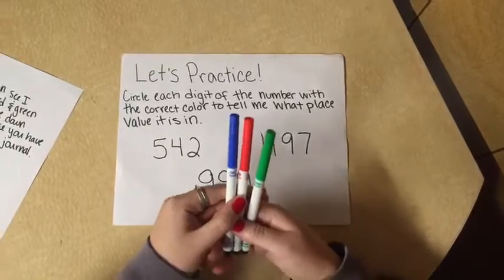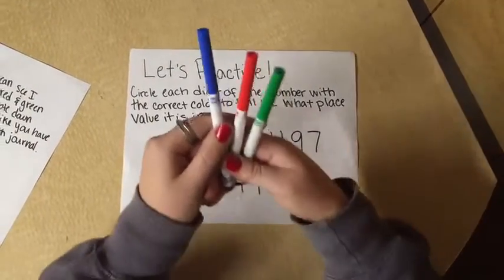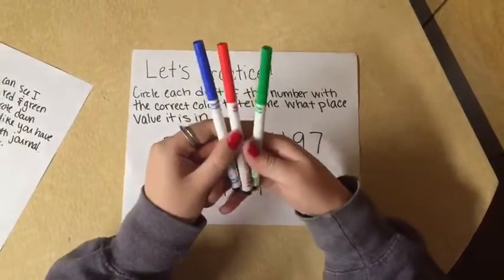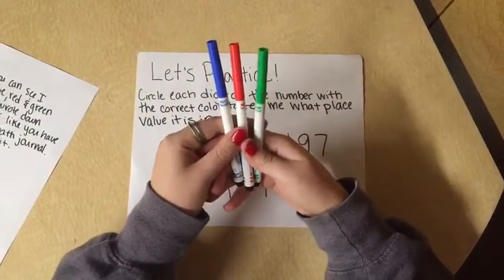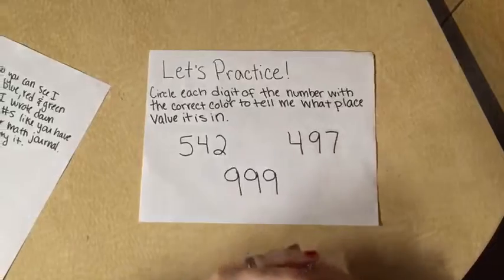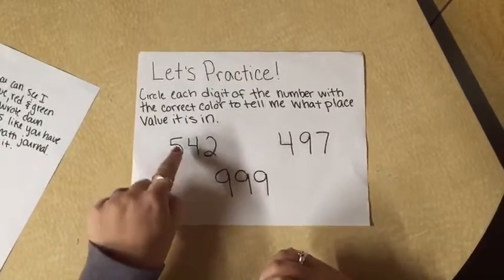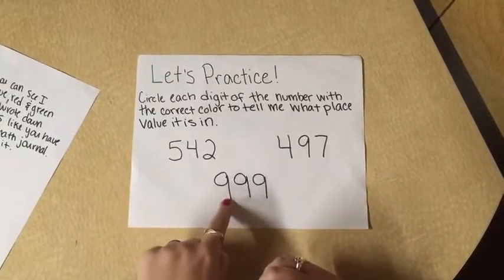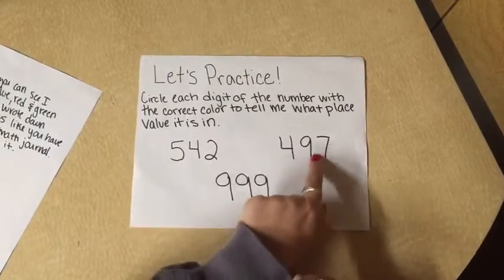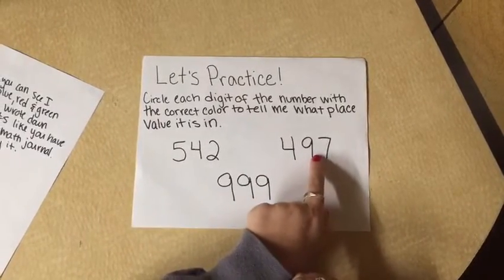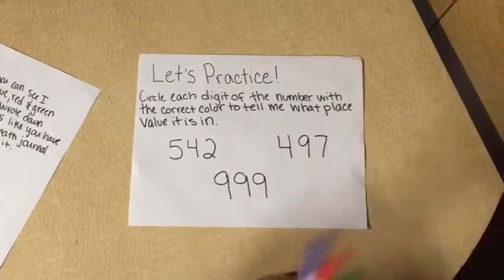Alright, so you can see I have my blue, red, and green markers. I wrote down our three numbers, just like you have in your math journal. Now let's try it together.